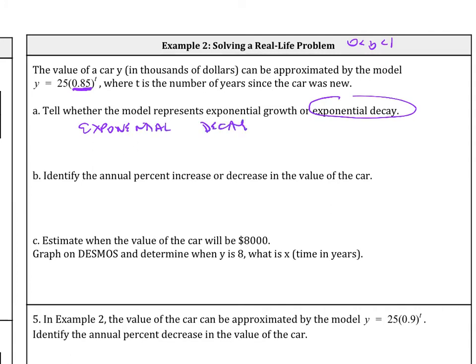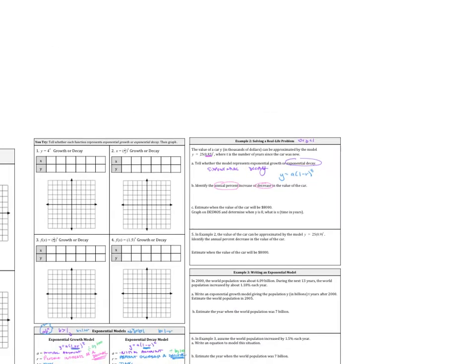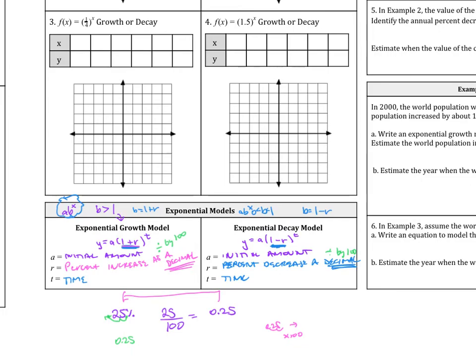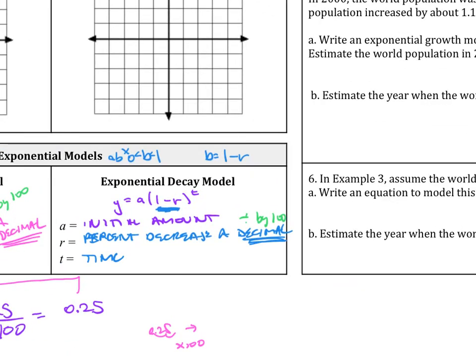So what we're going to do is we're going to use that model. So we're going to use y equals a times 1 minus r raised to the t. What we're trying to identify is the annual percent decrease in the value of the car. So we want to find the percent. We know this information here, and remember r represents, from here, r represents the percent decrease.